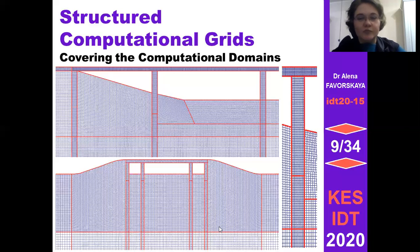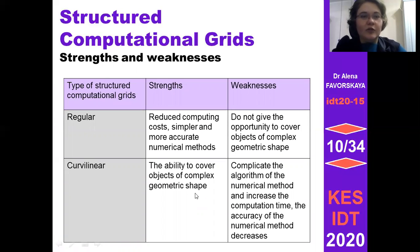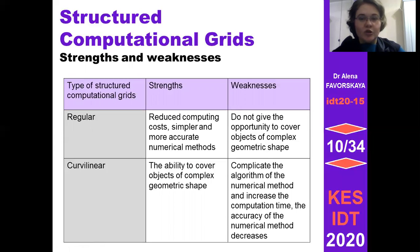A table shows the strengths and weaknesses of regular and curvilinear computational meshes. Regular computational meshes allow simpler and more accurate numerical methods, but cannot describe objects of complex shape. Curvilinear grids, conversely, can cover objects of complex geometric shape, but require more complicated computational algorithms — increasing computational time and decreasing the accuracy of numerical methods. Our novel modification of the grid characteristic method allows us to obtain the advantages of both types while avoiding their disadvantages.